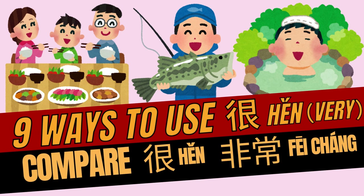Hello everyone, 大家好! Today we will be exploring an important Chinese character, 很, which means 'very' in English. We will also compare 很 and 非常. While both can translate to 'very' in English, there is a key difference between them. By the end of this lesson, we hope that you will have a clear understanding of when to use 很 and when to use 非常. Let's get started!